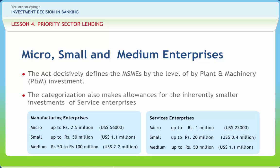A small enterprise is an enterprise where the investment in plant and machinery, original cost excluding land and building, is more than Rs. 25 lakhs but does not exceed Rs. 5 crores. A micro enterprise in the service sector is one where investment in equipment does not exceed Rs. 10 lakhs. A small enterprise in the service sector is one where investment in equipment is more than Rs. 10 lakhs but does not exceed Rs. 5 crores. A medium enterprise is one where investment in equipment is more than Rs. 2 crores but does not exceed Rs. 5 crores. The micro and small enterprises, both manufacturing and service, will be classified under priority sector.